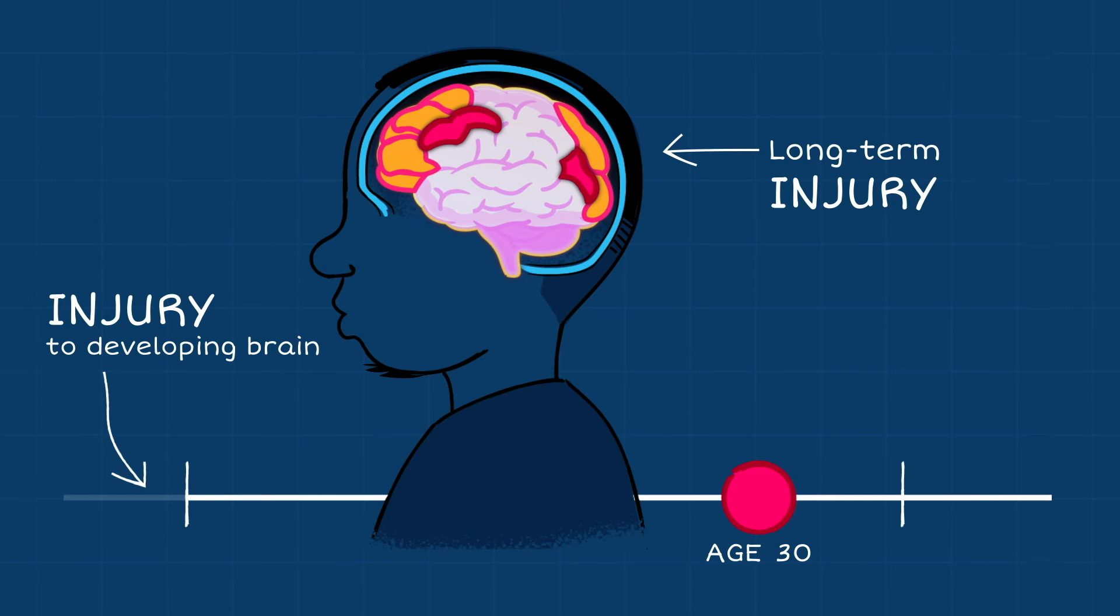The timeline begins at age 11. The boy and the brain grow in size as the dot on the timeline slides from left to right, increasing to age 30. Several sections of the brain flash red. An arrow pointing to this area of the brain reads, Long-term injury.